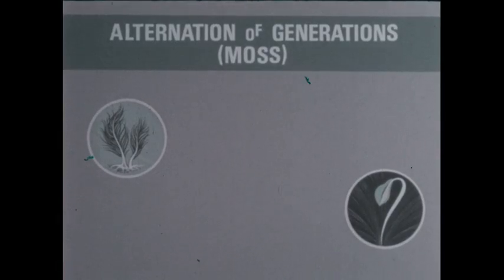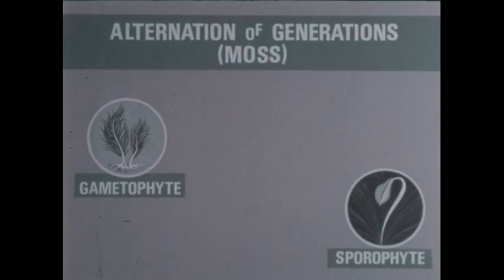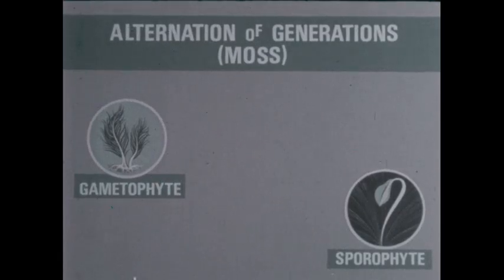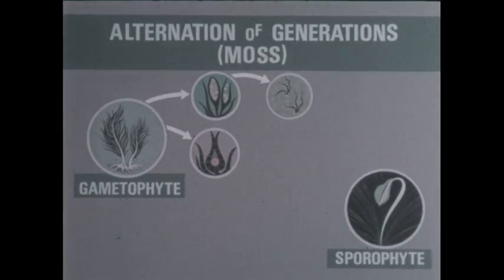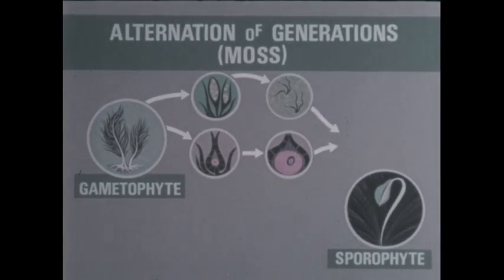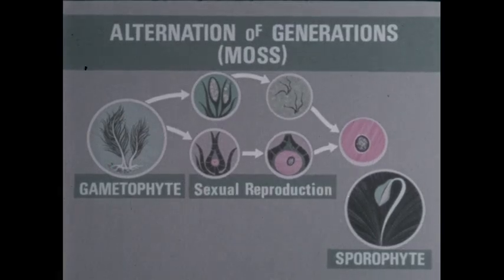Since alternation of generations is a continuous cycle, we may begin with either the gametophyte or the sporophyte generation. The tips of the leafy gametophyte develop antheridia and archegonia, sex organs. The antheridia produce sperm cells; the archegonia, egg cells. These male and female gametes unite to form a fertilized egg. This is sexual reproduction.